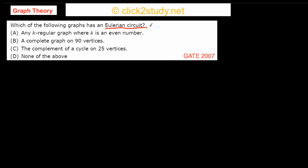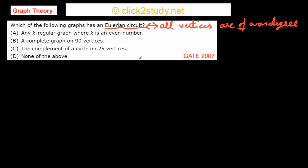There is a very important theorem about Eulerian circuits: a graph has an Eulerian circuit if and only if all vertices in the graph are of even degree. That is the sufficient and necessary condition for an Eulerian circuit. I'm not proving this theorem here, but you need this to solve the problem.